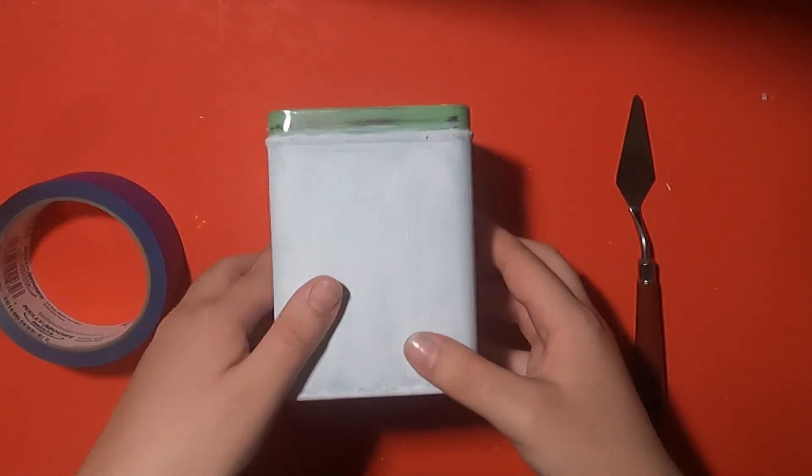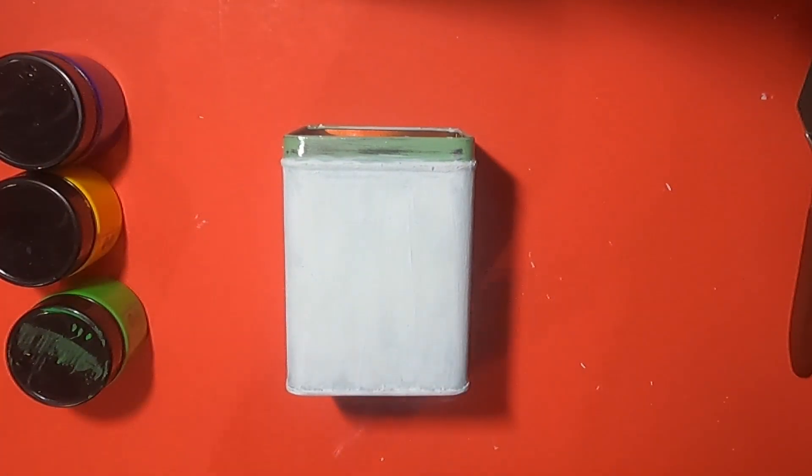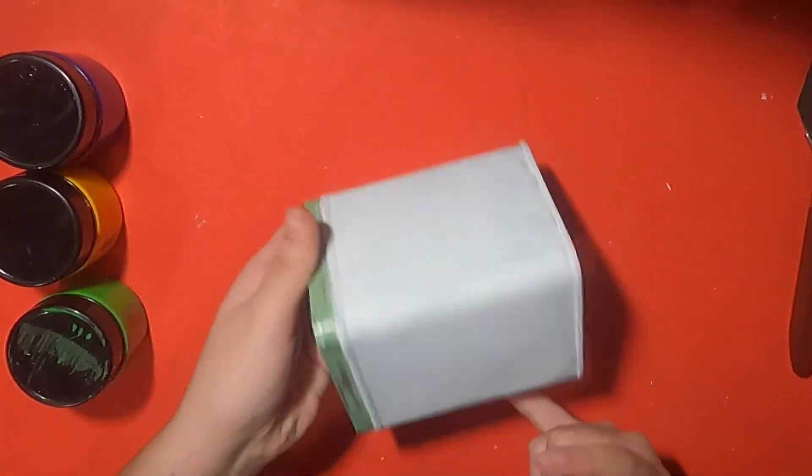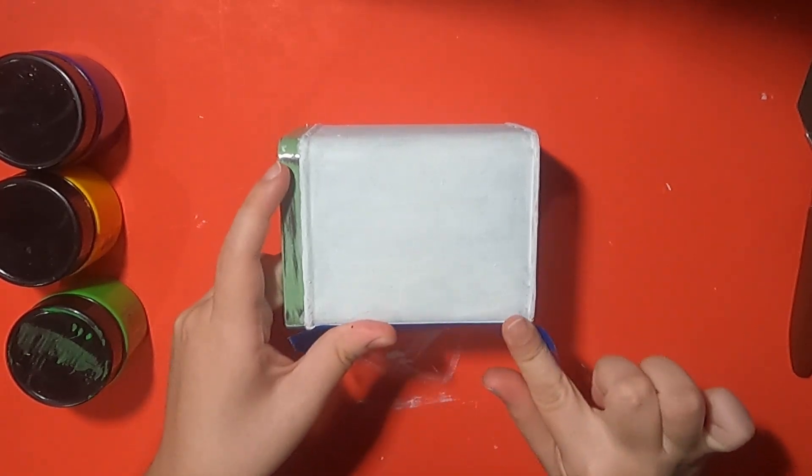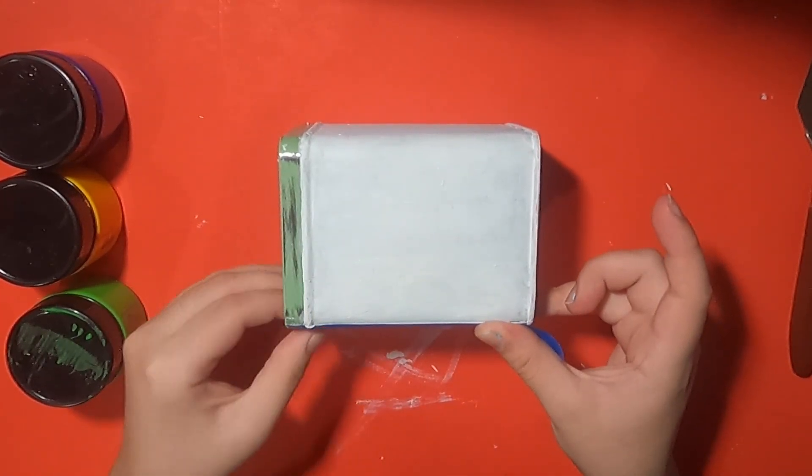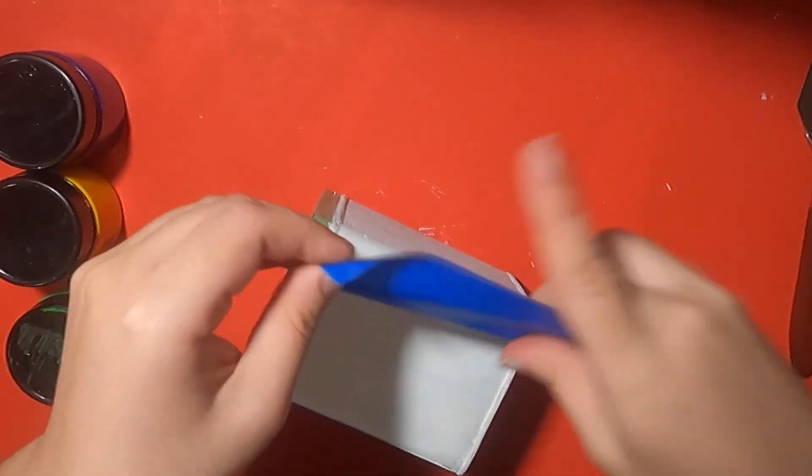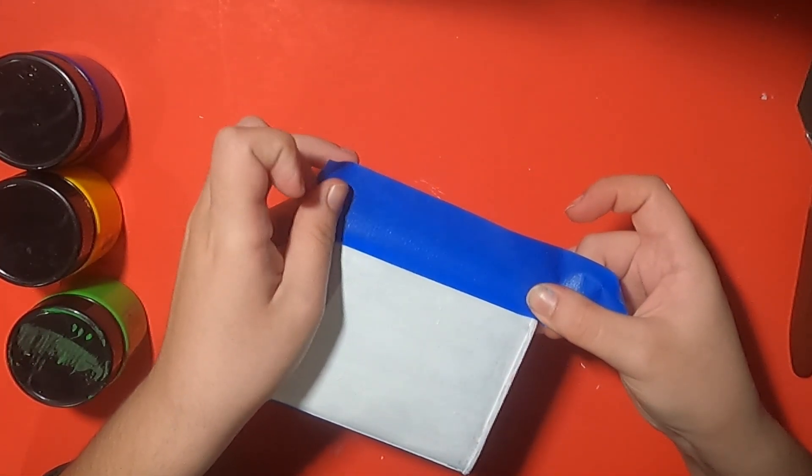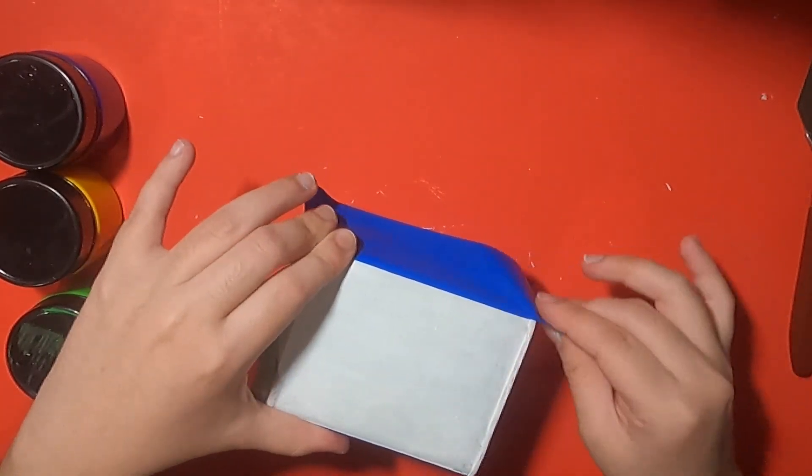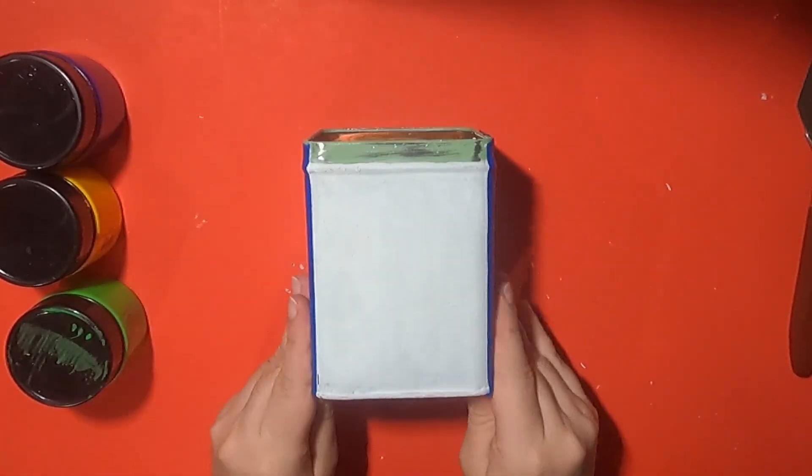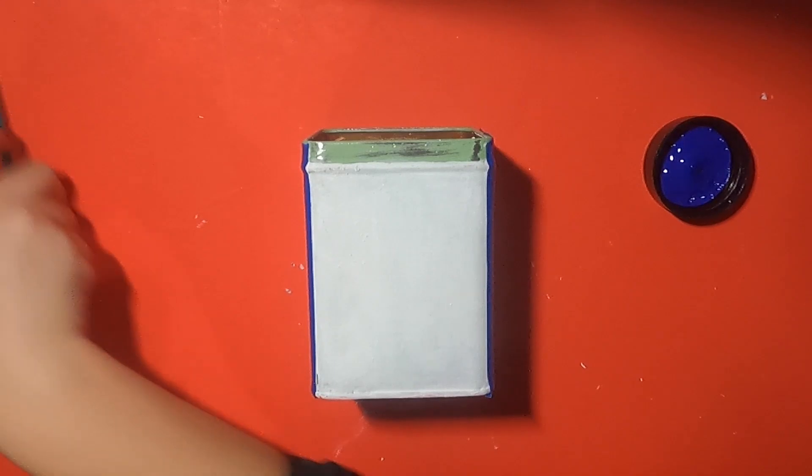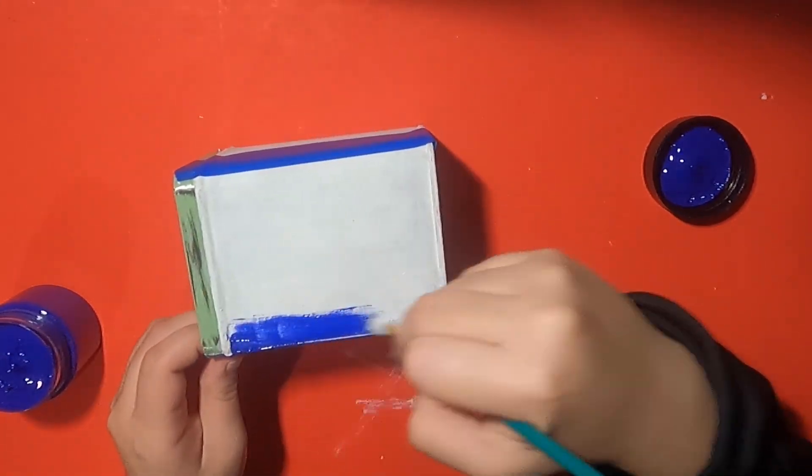At this point I haven't decided on exactly what I want to paint, but I know I'm going to want it to be very colorful. So each side of the tin is going to be a different color. In order to achieve nice straight lines, I'm going to put some masking tape down before painting.